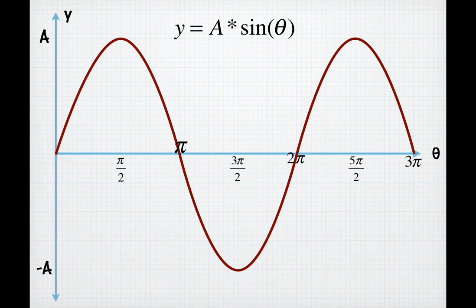This pattern will then continue and at each integer pi, you'll be at zero and at each odd number times pi over 2, you'll be at your maximum or minimum value. The equation for this curve is y equals A sine theta.